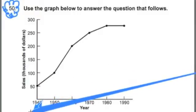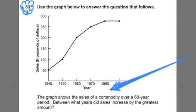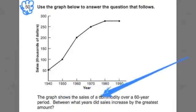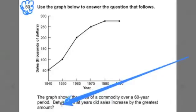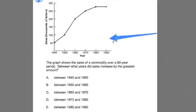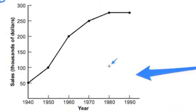So now I'll start with reading over the question. It says, the graph shows the sales of a commodity over a 60-year period. Between what years did the sales increase by the greatest amount? And we have a range of years. And I'll go back to this graph here. I'll enlarge it, make it nice and big. Which year did they, which 10-year period did they do the best in sales? The most amount of growth.